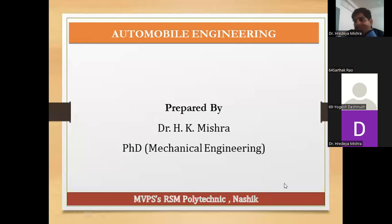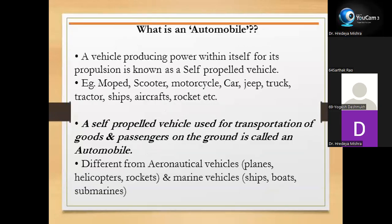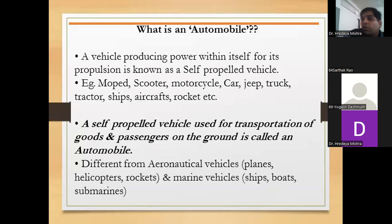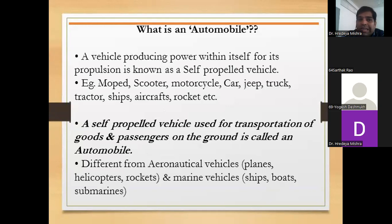Now we talk about the subject briefly. What is an automobile? A vehicle that produces power within itself for its own propulsion is known as a self-propelled vehicle.